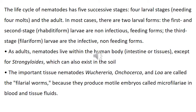The life cycle of nematodes has five successive stages: four larval stages needing four molts, and the adult. In most cases there are two larval forms. The first and second stage — rhabditiform larvae — are non-infectious feeding forms. The third stage — filariform larvae — are the infective non-feeding forms. Adult nematodes live within the human body, intestinal or tissues, except for Strongyloides which can also exist in the soil. The important tissue nematodes — Wuchereria, Onchocerca, and Loa — are called the filarial worms because they produce motile embryos called microfilariae in blood and tissue fluids.